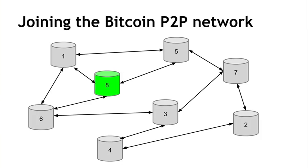There are a few steps of randomness here. Depending on which seed node you used or which of the peers of the seed node you decided to talk to, you'll end up with a random set of nodes that you're connected to. But that's perfectly fine.